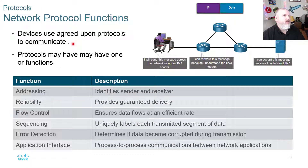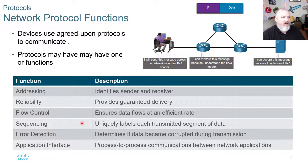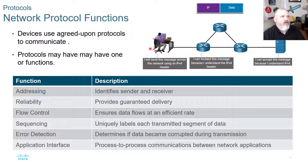Network protocol functions: devices use agreed-upon protocols to communicate, and protocols may have one or more functions. They identify the sender and receiver. Reliability provides guaranteed delivery. Flow control ensures data flows at an efficient rate. Sequencing labels each transmitted segment of data. Error detection determines if data became corrupted during transmission — for example, if you lost some packets or had interference. Application interface handles process-to-process communications between network applications. As an example, a user sends a message across the network using IPv4; the message is forwarded because devices understand the v4 header.